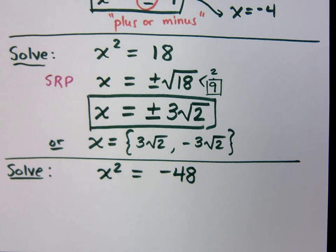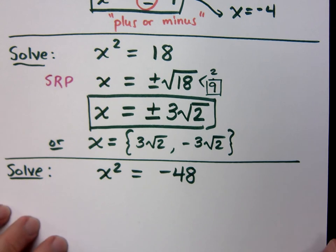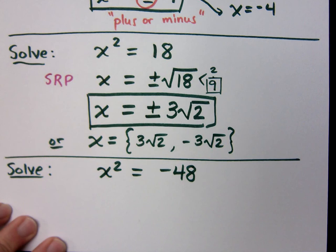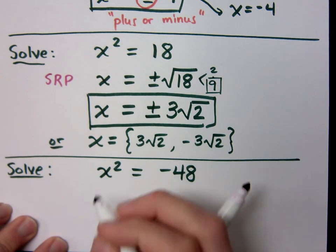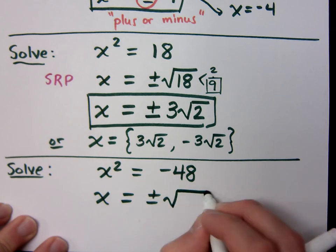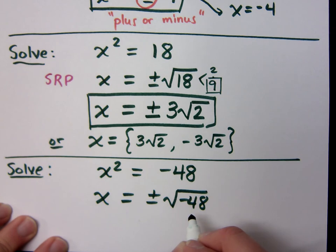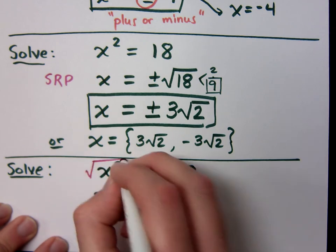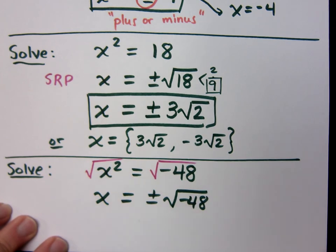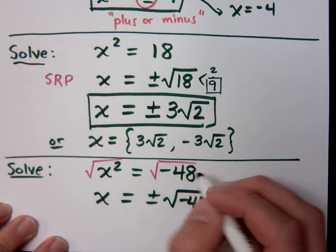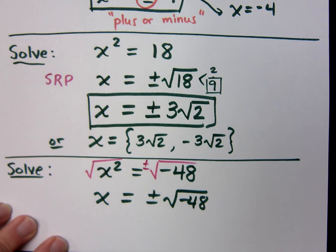Next example: x squared equals negative 48. I've got my square by itself. What's the opposite of squaring something? Square root. So this is equal to plus or minus the square root of negative 48. When you apply the square root property and take the square root of both sides, you've got to remember the plus or minus. Drop the plus or minus, and you're dropping half your answers and losing half your points.